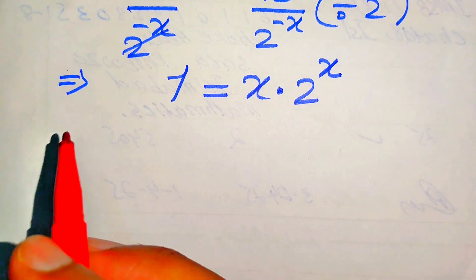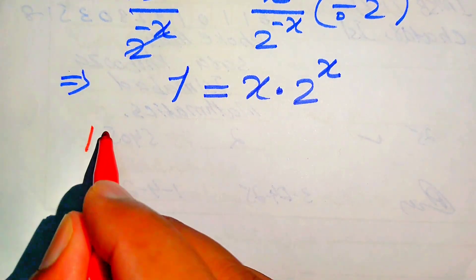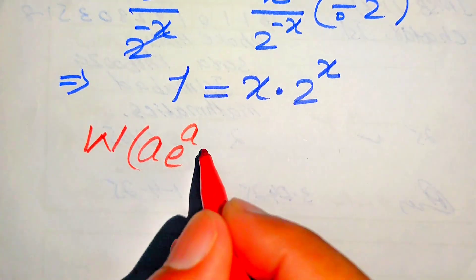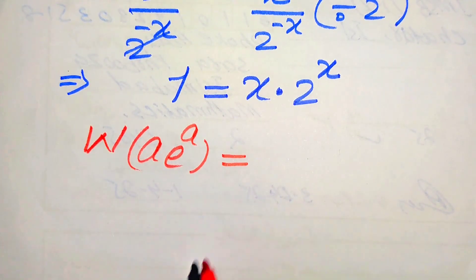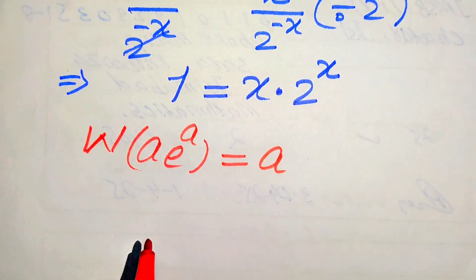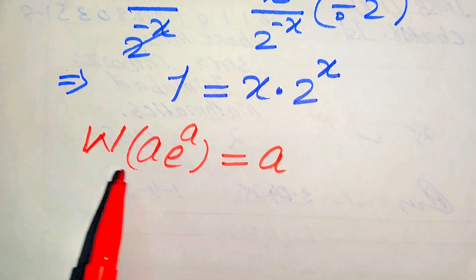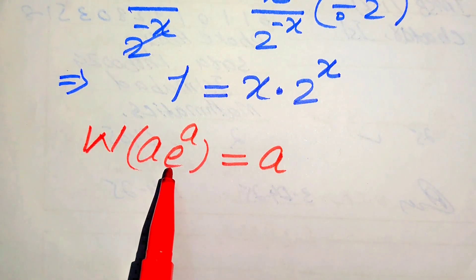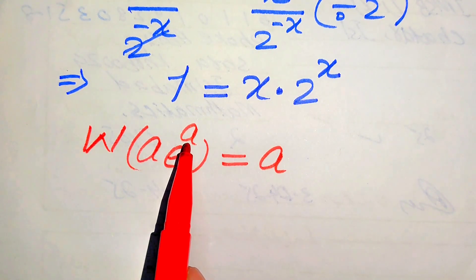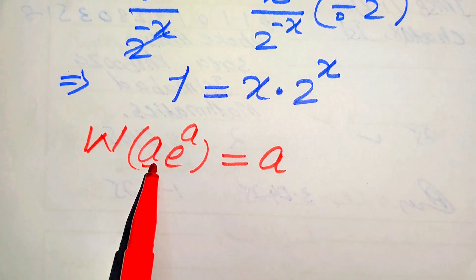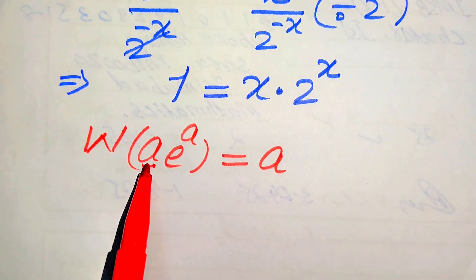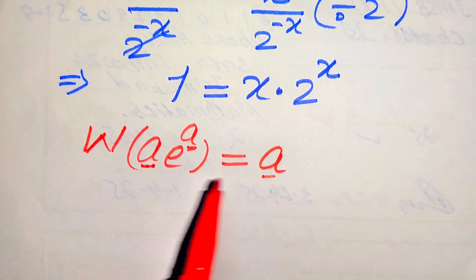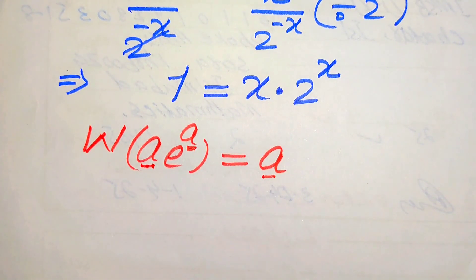Here we briefly explain the Lambert W function. It is stated as: W of (a times e to the power of a) is equals to a. We apply this Lambert W function on functions where we have an exponential with base e whose exponent is multiplied by the same term, and the output is that exponent value a.